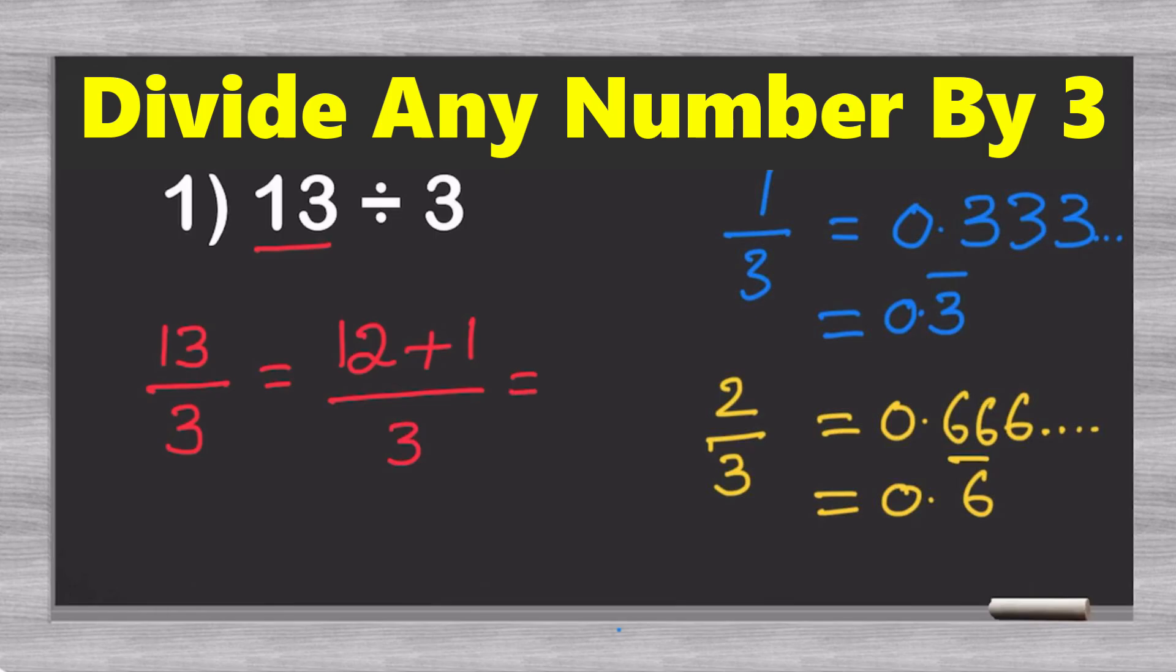And now, the only thing that we have to do to finish this trick is to just divide. 12 over 3 is 4, as we already know. That one is divisible by 3. But the other thing that we have left is now 1/3, which as we have seen, is just 0.3 repeating. And so, all we have to do is just add that to our total. And that's the answer. 13 divided by 3 is in fact equal to 4.3 repeating.